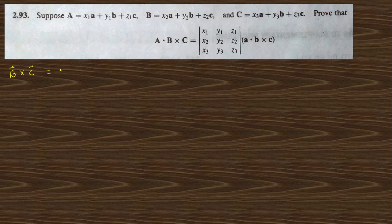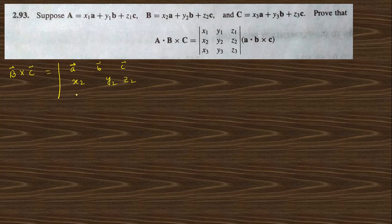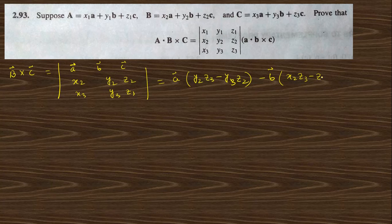First, find b cross c. Here b is (x2, y2, z2) and c is (x3, y3, z3). The cross product b cross c can be written as a vector times (y2·z3 − y3·z2), minus b vector times (x2·z3 − z2·x3), plus c vector times (x2·y3 − x3·y2).